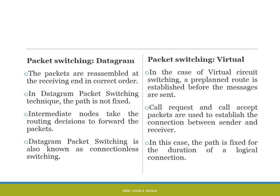In datagram packet switching, packets are reassembled at the receiving end in the correct order, and the path is not fixed. In virtual circuit switching, a pre-planned route is established before messages are sent, so the path is fixed. Intermediate nodes take routing decisions to forward packets in datagram switching, whereas in virtual circuit switching, call request and call accept packets are used to establish the connection between sender and receiver. Datagram packet switching is also known as connectionless switching, whereas in virtual packet switching the path is fixed for the duration of the logical connection.